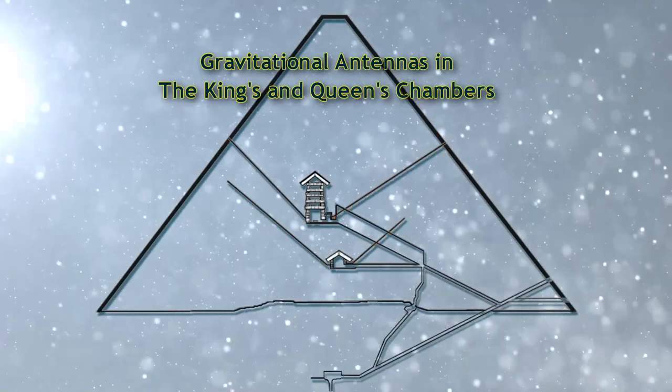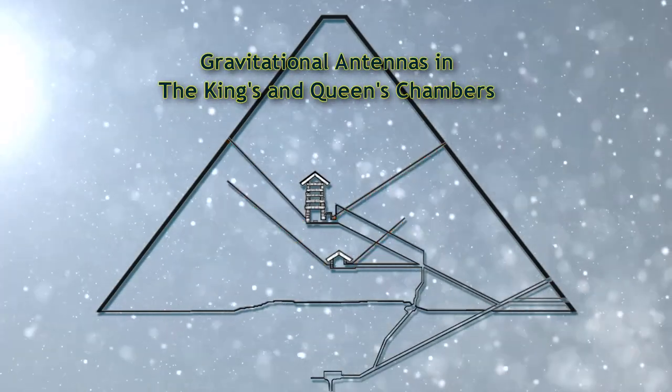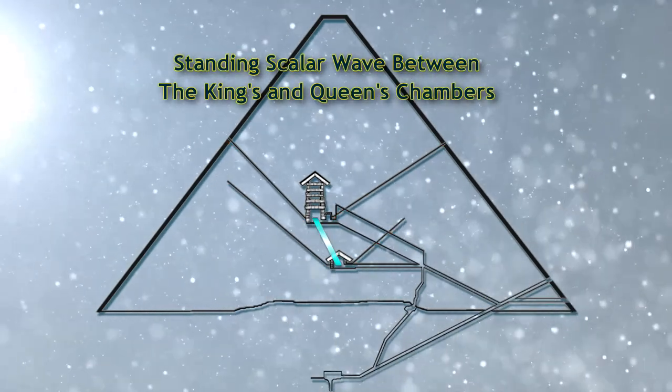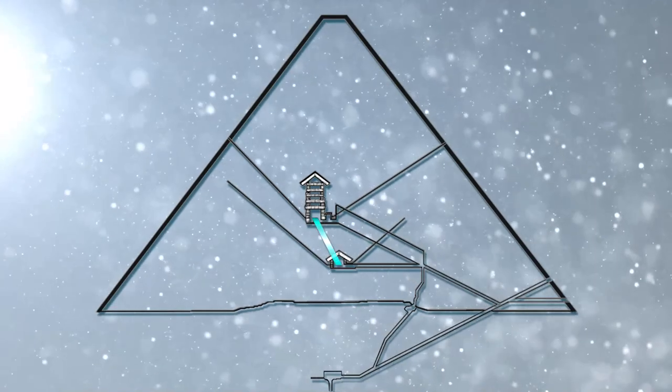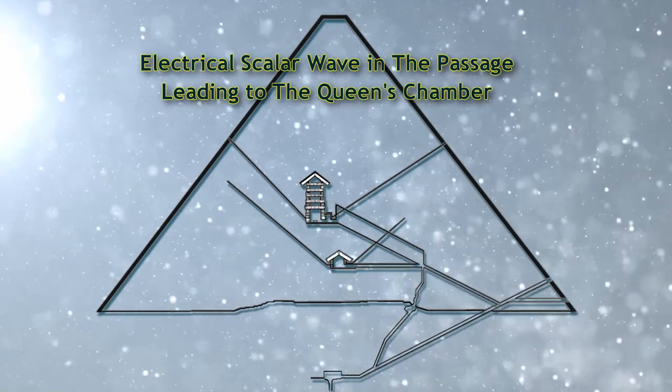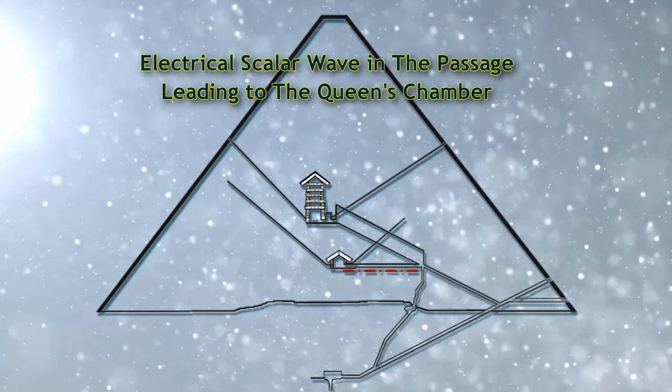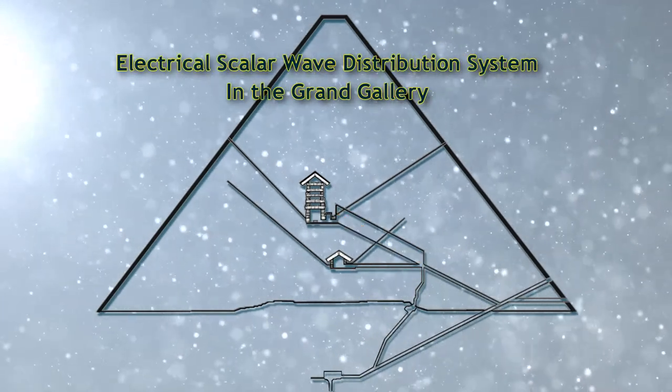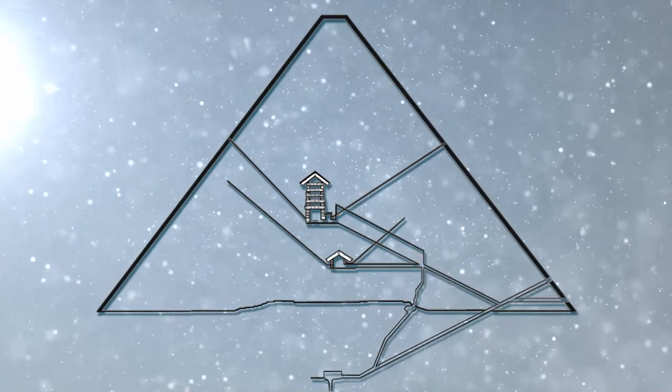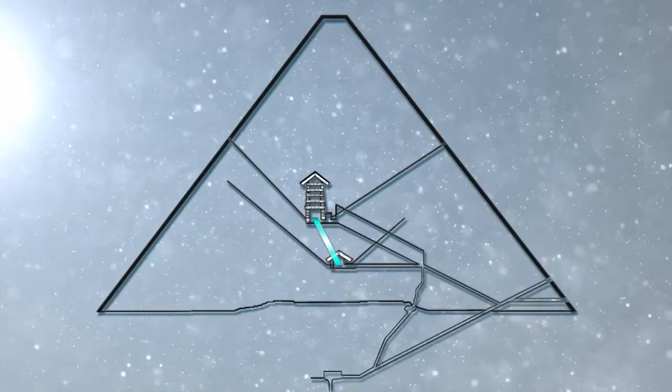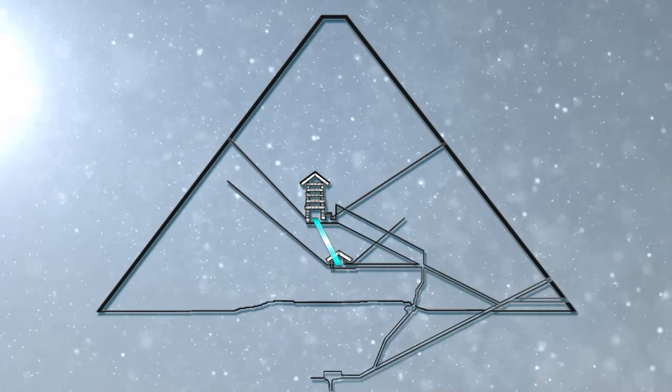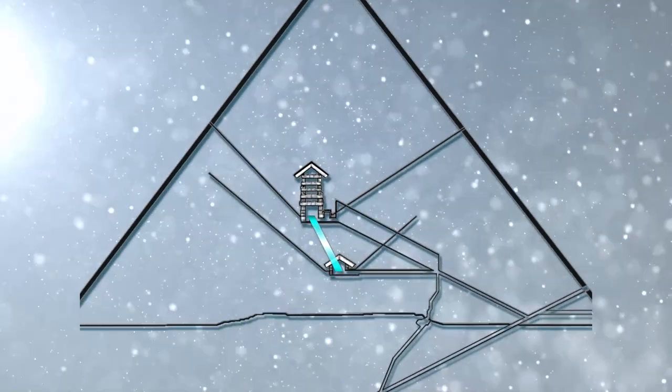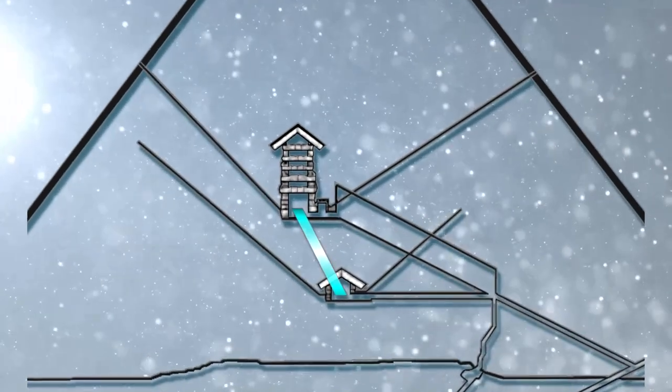Gravitational antennas in the king's and queen's chambers. Standing scalar wave between the king's and queen's chambers. Electrical scalar wave in the passage leading to the queen's chamber. Electrical scalar wave distribution system in the grand gallery. The heart of the Khufu pyramid's energy system is the one seemingly not discussed so far. This is the distance between the king's and queen's chambers.